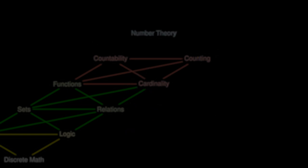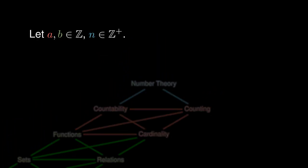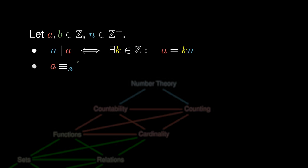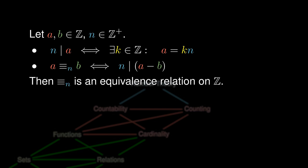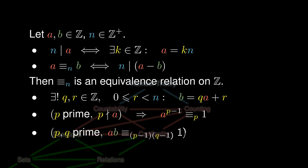These pure ideas in discrete math can be applied in two ways. Firstly, from a number theoretic point of view, we can use this to define divisibility and congruence in terms of divisibility. It turns out that congruence modulo n forms an equivalence relation on the integers. This helps us derive the Euclidean algorithm, which tells us we can always find integers q and r such that b can be written in terms of a, q, and r. We can also define Fermat's Little Theorem, which tells us that a to the p minus 1 is equivalent to 1 modulo p. Finally, this can be applied in cryptographic ideas, which is used in RSA encryption.